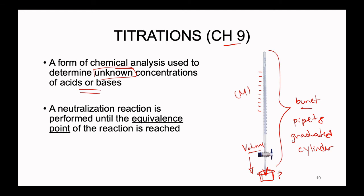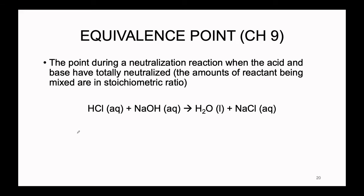We perform a titration up until what is called the equivalence point. The neutralization reaction is finished once we hit the equivalence point. The equivalence point is the point of neutralization when the acid and the base have totally neutralized — the molar amounts of acid and base added are in stoichiometric ratio. In acid-base reactions, since protonation occurs step by step, the stoichiometric coefficients are typically one, so the moles of HCl must equal the moles of NaOH.